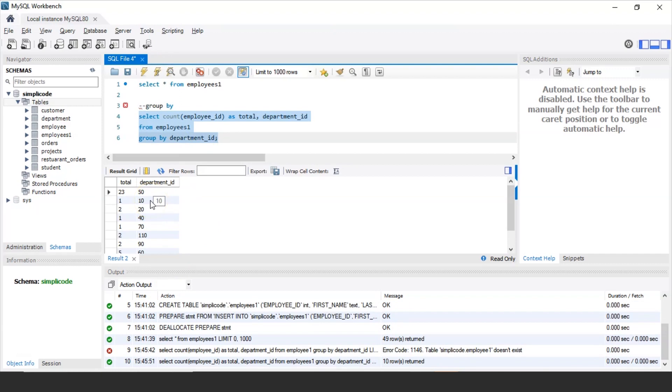So as you can see it will display the total employees that are present in each and every department. Now if you look at the department ID column we have the values in a random way.